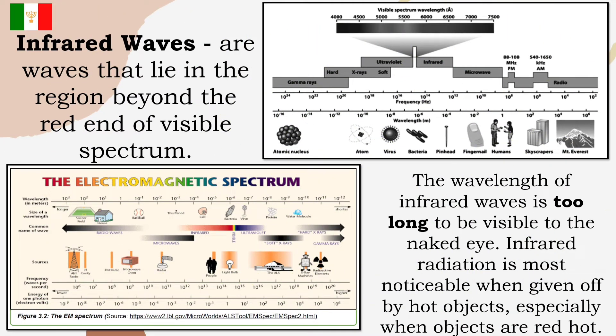Infrared waves are waves that lie in the region beyond the red end of visible spectrum. The wavelength of infrared waves is too long to be visible to the naked eye. Infrared radiation is most noticeable when given off by hot objects, especially when objects are red-hot. This is invisible to the eye, but it can be detected as a sensation of warmth on the skin.